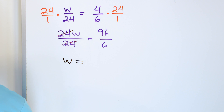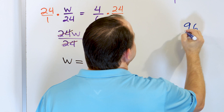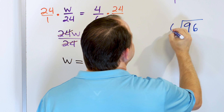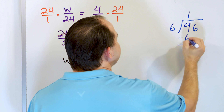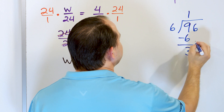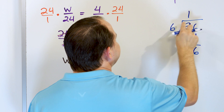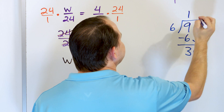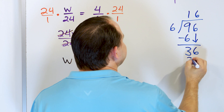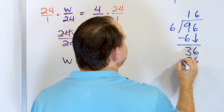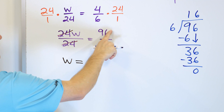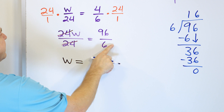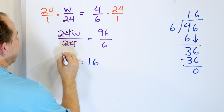Because we multiplied by 24, now we have 24 divided by 24, which means they go away. So we have W equals 96 divided by six. Let's figure out what 96 divided by six is. Six goes one time into nine — six times one is six, difference is three; drag down a six — six times six is 36, remainder zero. So it goes 16 times. 96 divided by six is 16, and W equals 16 is the final answer.